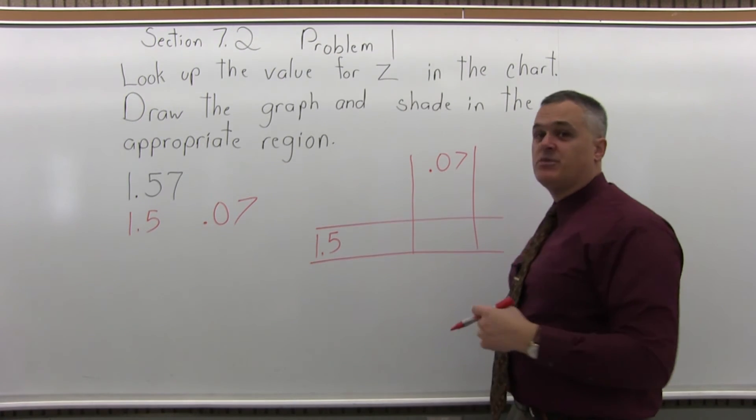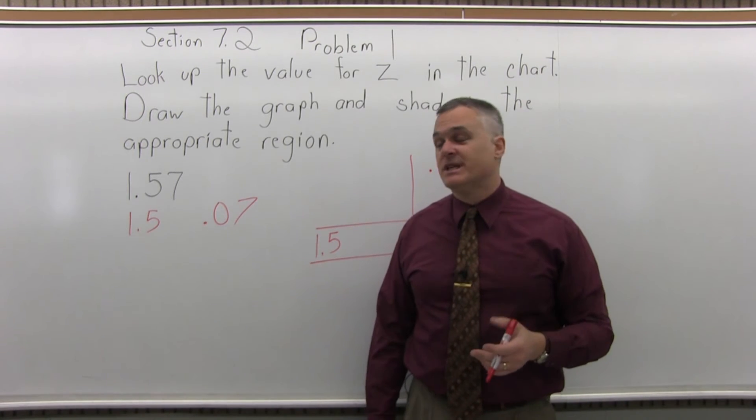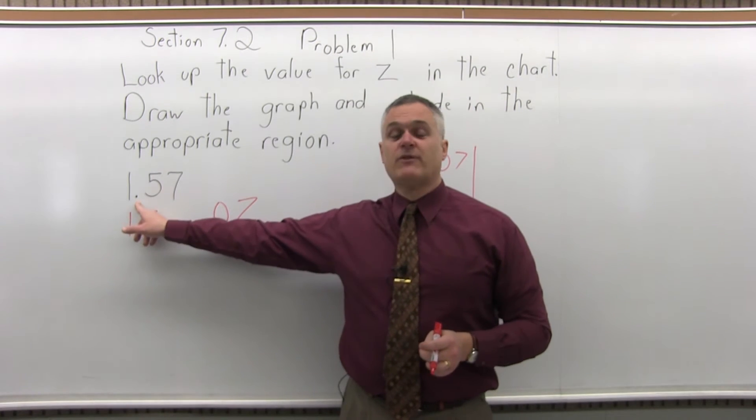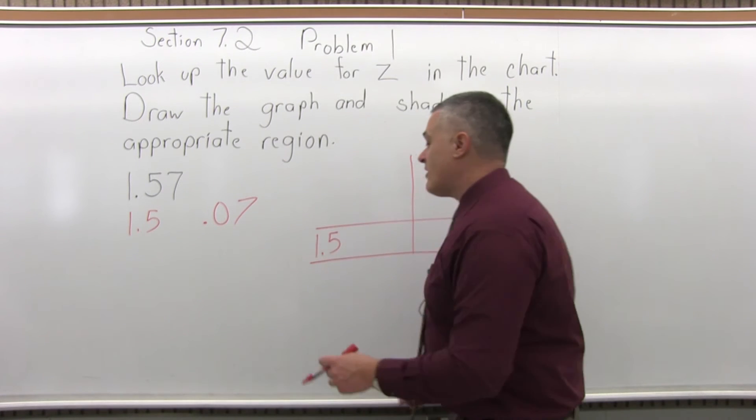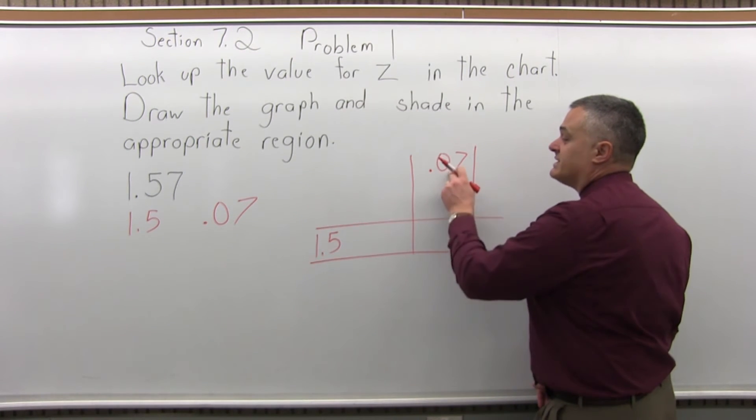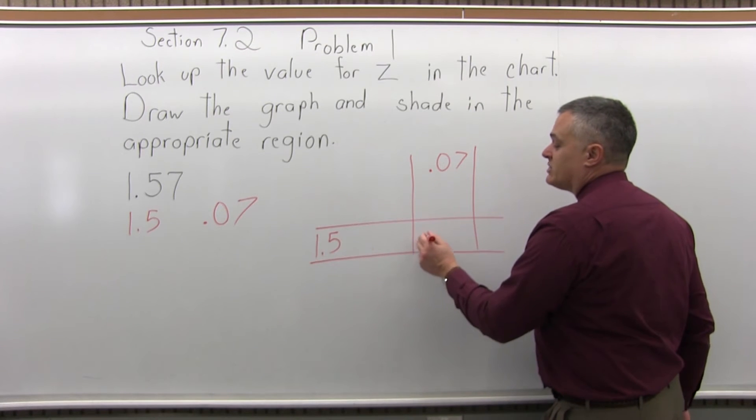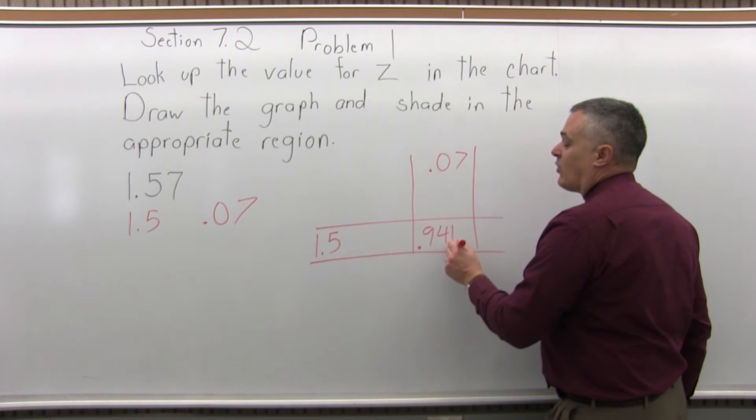And you have to pay attention, there's two pages to the chart. One's positive, one's negative. This is a positive 1.57, make sure you're on the positive page in the chart. So now if you intersect the 1.5 row with the 0.7 column, the chart will tell you .9418.